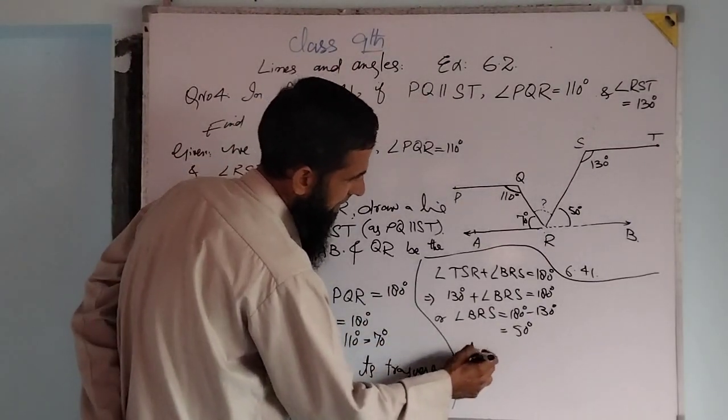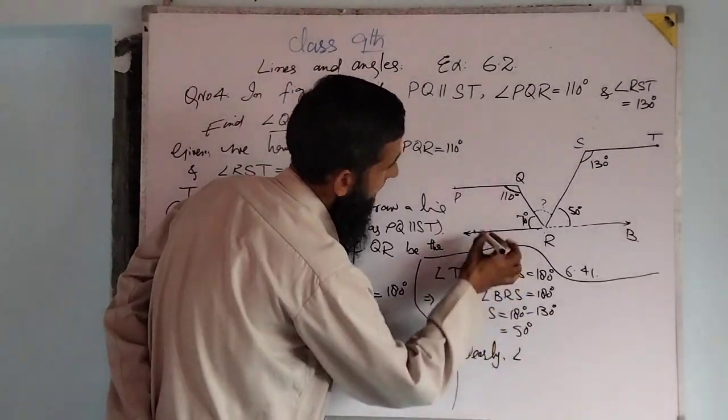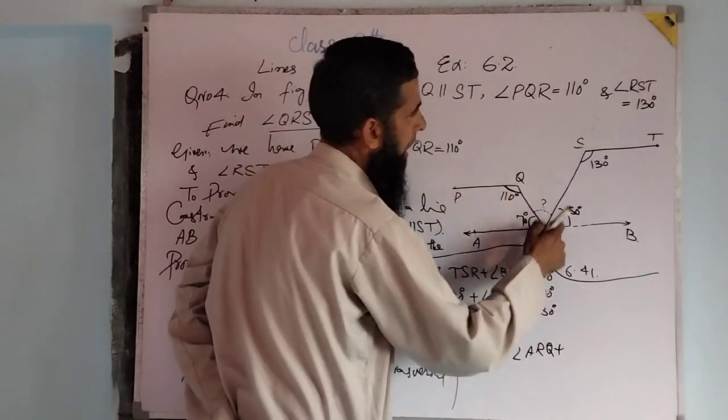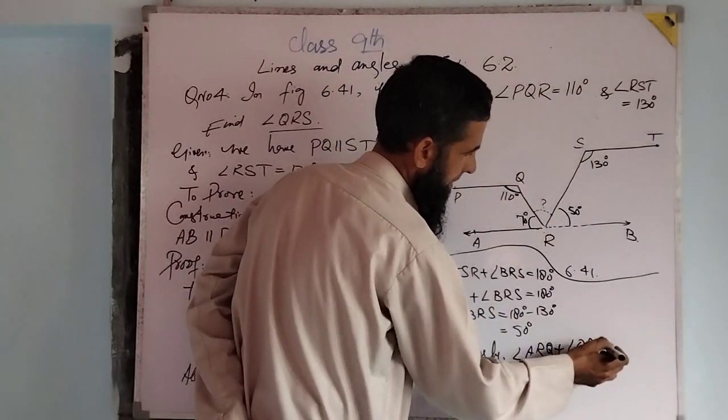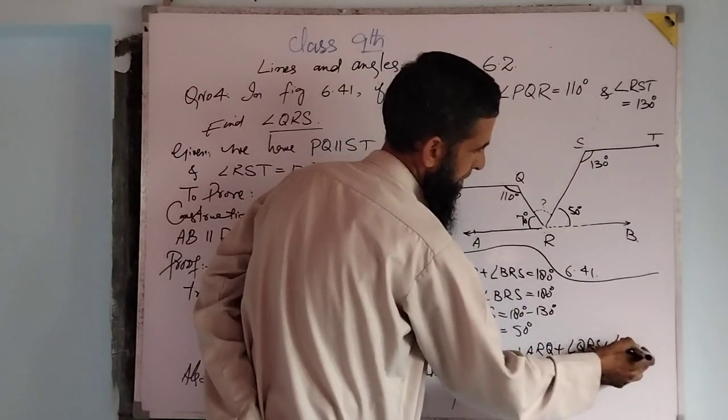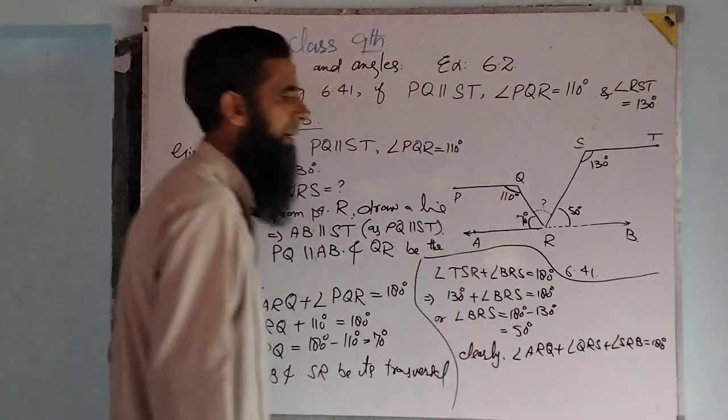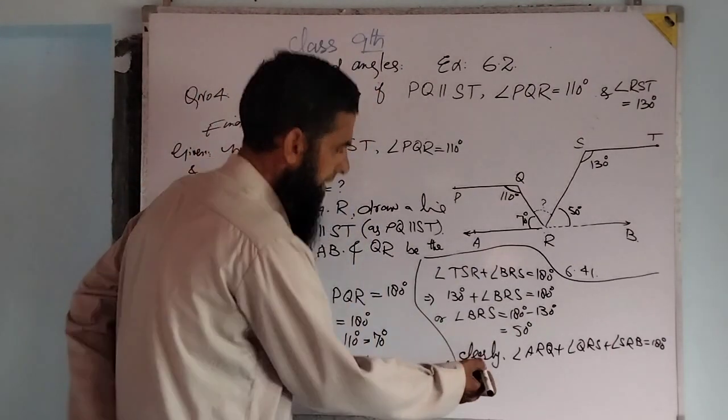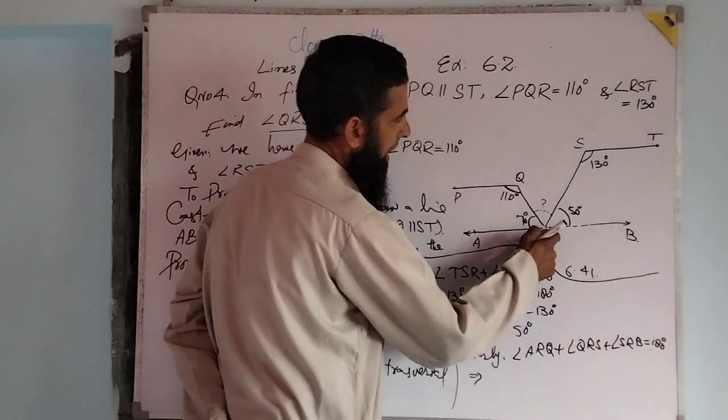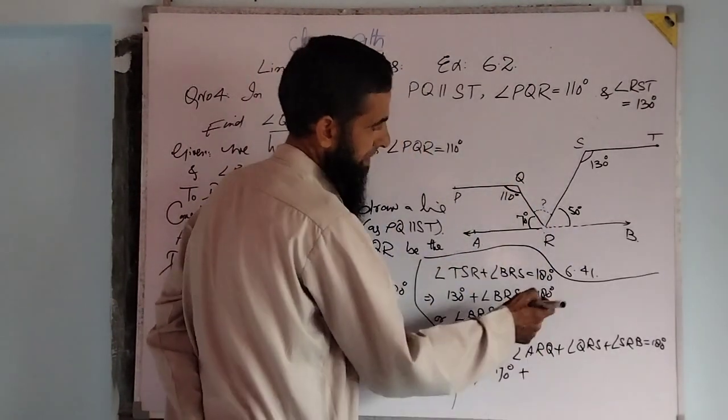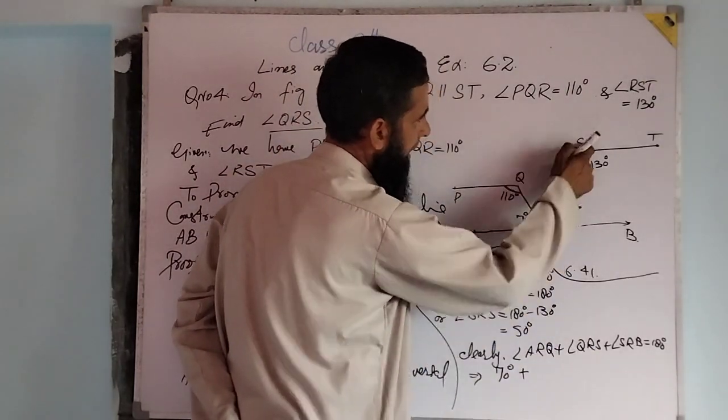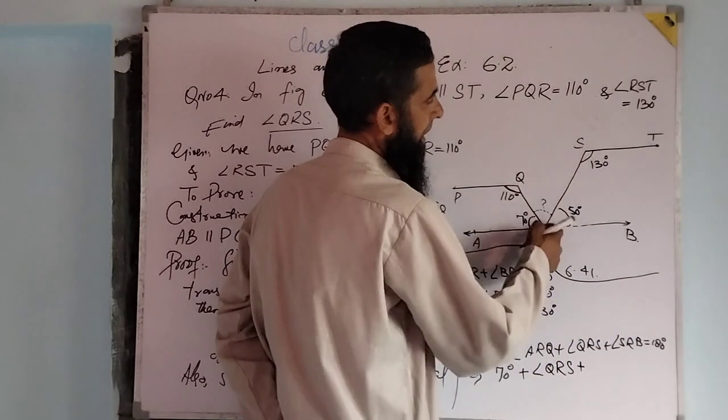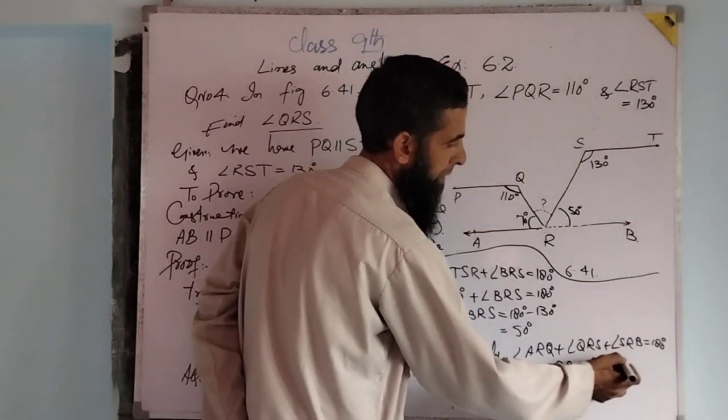Also, clearly, angle ARQ plus angle QRS plus angle SRB equals 180 degrees, as these angles form a straight angle. This implies angle ARQ, which is 70 degrees, plus angle QRS, the angle we have to find, plus angle SRB, which is 50 degrees as proved above, equals 180 degrees.